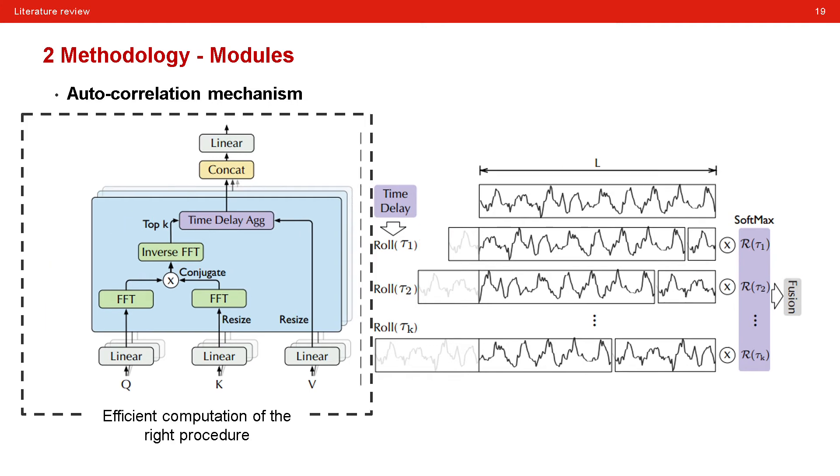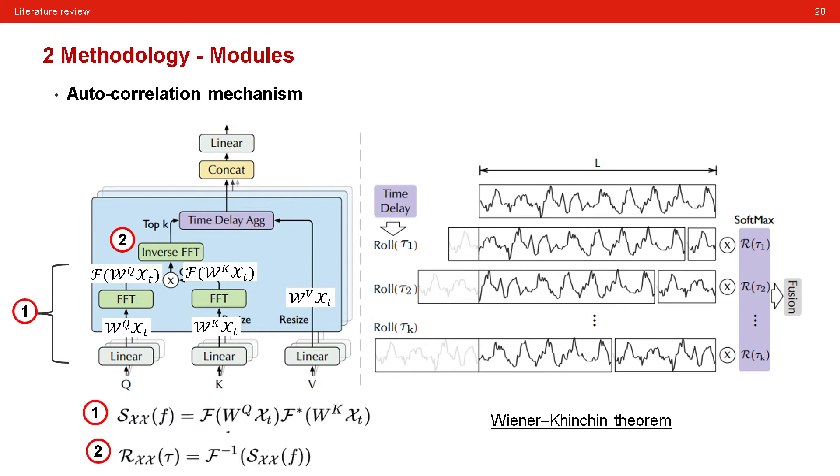The left figure is the efficiency implementation of the idea on the right. The basic idea of the efficient computation is the Wiener-Khinchin theorem. As the auto-correlation of time series and shifted time series can be regarded as a kind of convolution, we can transform these two series into a frequency domain in which the convolution can be transformed to multiplication. Therefore, the computation complexity is reduced.